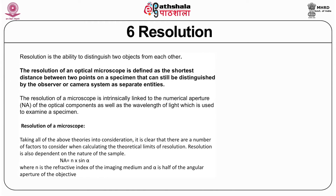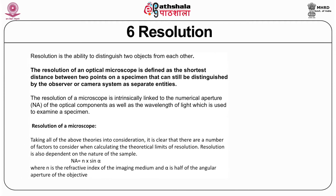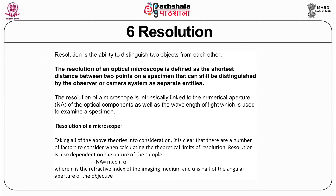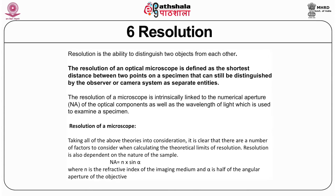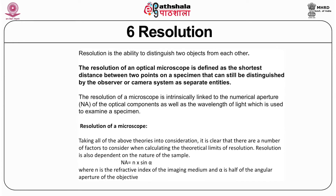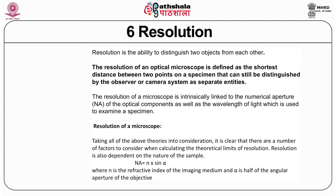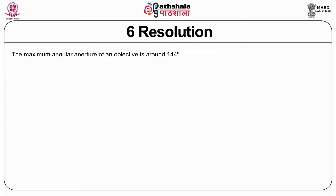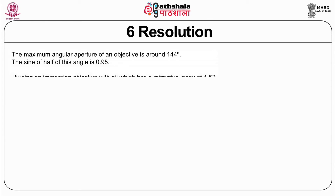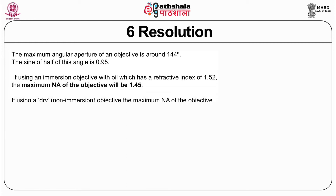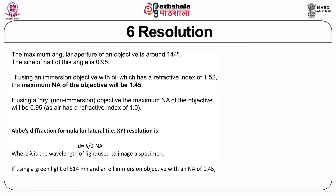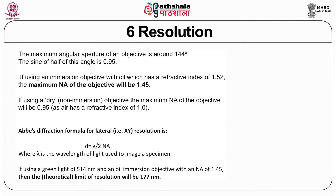You have studied Heisenberg's uncertainty principle in paper one and in more detail in paper two on quantum biophysics. Now let us understand resolving power in terms of the Heisenberg uncertainty principle. The numerical aperture is given by NA = n × sin(α), where n is the refractive index of the medium — air equals 1 — and α is half the angular aperture of the objective. The maximum angular aperture of an objective is about 144°, giving sin(α/2) ≈ 0.95. If using an oil immersion objective, the refractive index changes to 1.52.